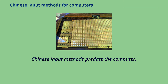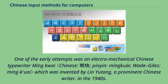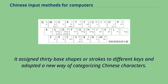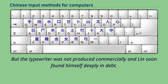Chinese input methods predate the computer. One of the early attempts was an electromechanical Chinese typewriter called Ming Kuai, which was invented by Lin Yutang, a prominent Chinese writer, in the 1940s. It assigned 30 base shapes or strokes to different keys and adopted a new way of categorizing Chinese characters, but the typewriter was not produced commercially and Lin found himself deeply in debt.